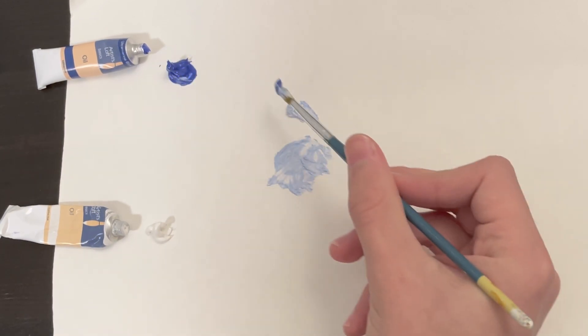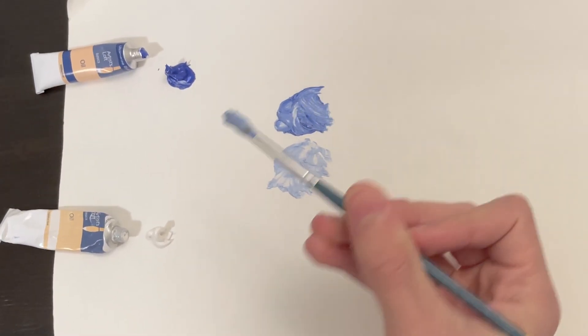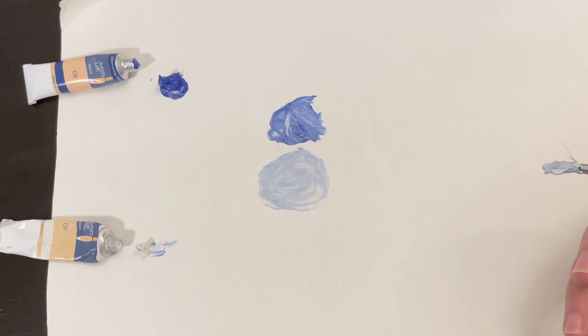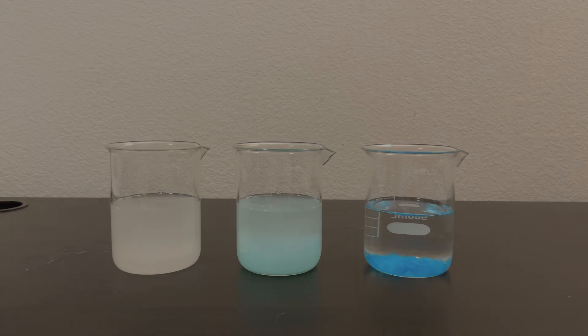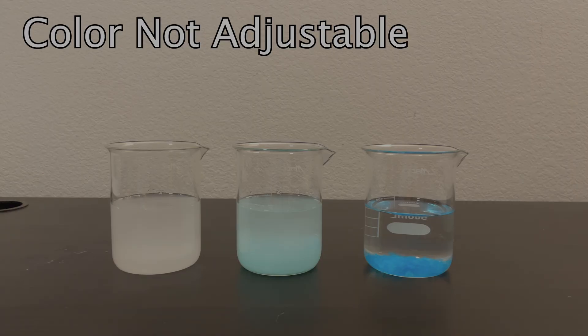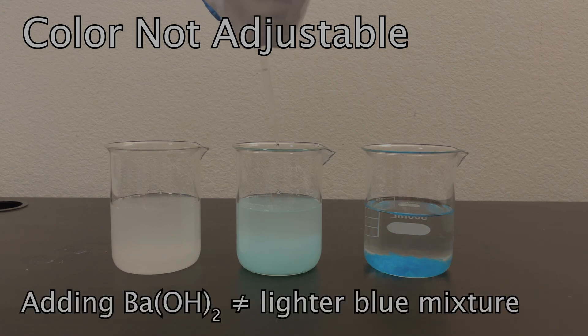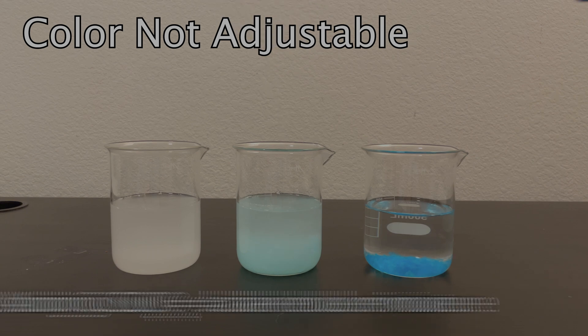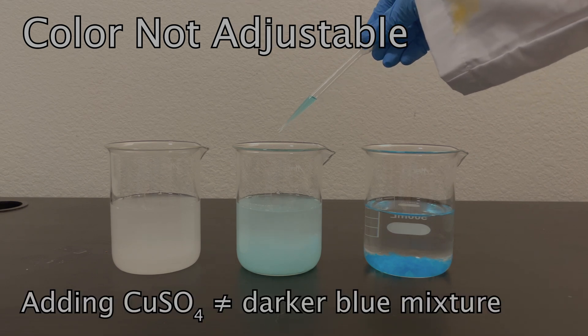But the paint analogy isn't 100% correct. With paint, I can add more blue to make it a darker blue, or more white to make it a lighter blue. But with precipitates, the color isn't adjustable. I can't add more barium hydroxide to this middle beaker to make the solid a lighter blue. Nor can I add more copper sulfate to make it a darker blue.